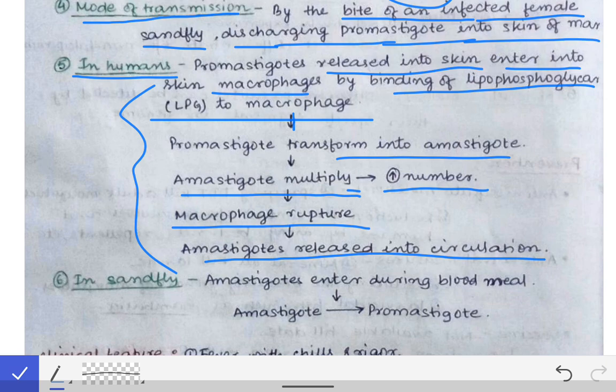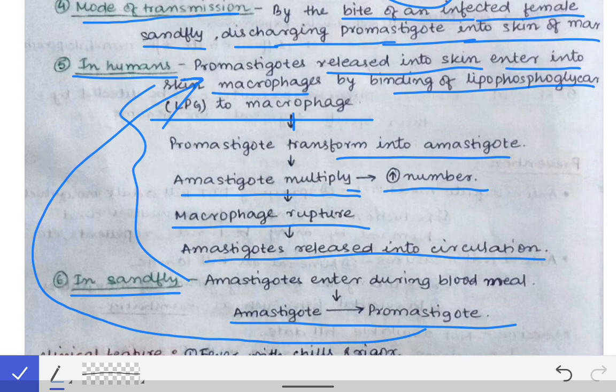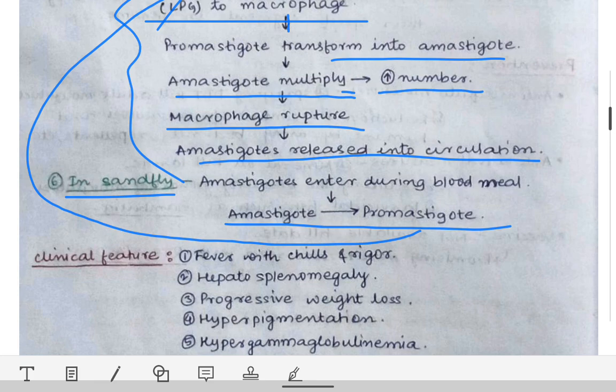The amastigotes crowded inside the macrophages are released into the circulation. With the blood meal of a new sand fly, these amastigotes enter a fresh sand fly, where they get converted back into promastigotes. The promastigotes are then transmitted by the sand fly's bite to another person, completing the life cycle.